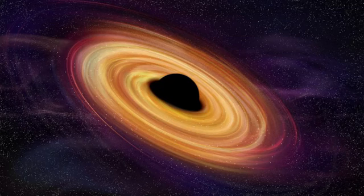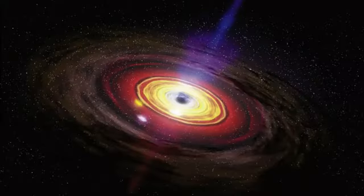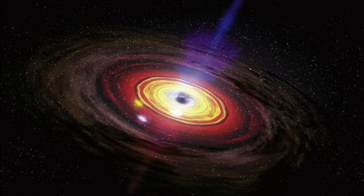It is believed that Sagittarius A asterisk is the location of a supermassive black hole like those that usually exist in the centers of most spiral and elliptical galaxies.